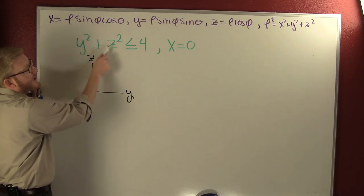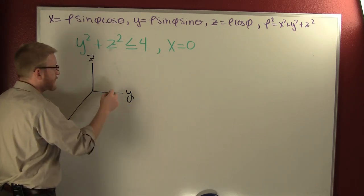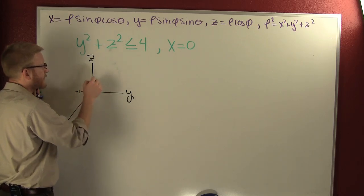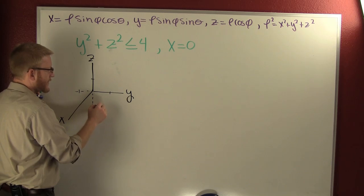What you see is in your yz plane you have a circle, a circle of radius 2. That's in your yz plane, a circle of radius 2.